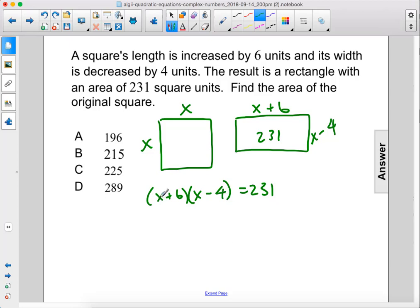So we are going to multiply this out and we get x squared plus 2x minus 24 equals 231. We're going to subtract 231 from both sides and we get x squared plus 2x minus 255 equals 0.